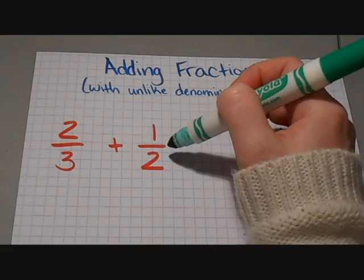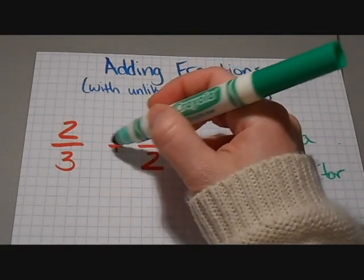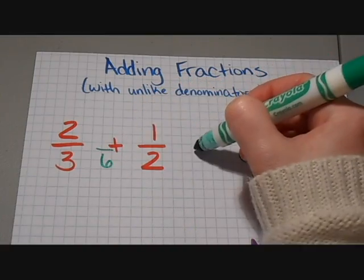So I need to find a number that both 3 and 2 can go into evenly. So for these particular fractions, that number is going to be 6.